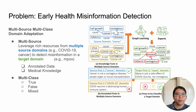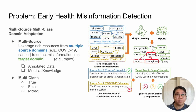In this work, we focus on the problem of early health misinformation detection. The goal of our study is to leverage and adapt existing resources from multiple source domains, such as COVID and cancer, to detect misinformation in an emerging target domain, such as MPOX.